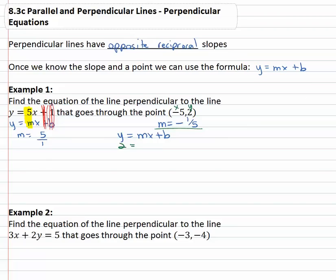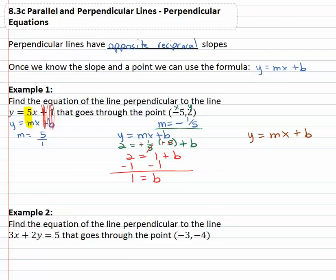So y is 2, equals m the slope of negative 1 fifth, times x which is negative 5, plus b which is what we're looking for. The fives divide out, which is really nice. A negative times a negative is a positive, so we have 2 equals 1 plus b. Subtract 1 from both sides and we see 1 equals b, or 1 is the y-intercept. Our final equation is y equals negative 1 fifth x plus 1.